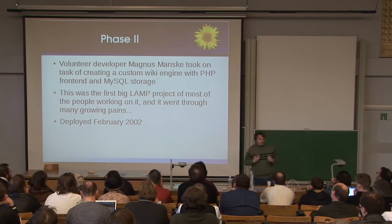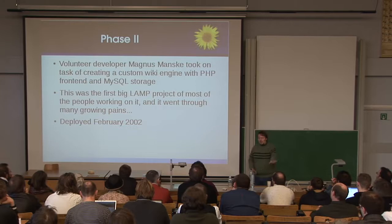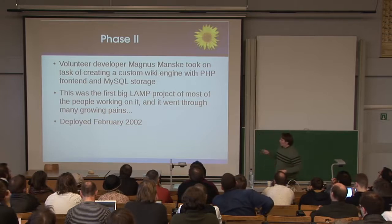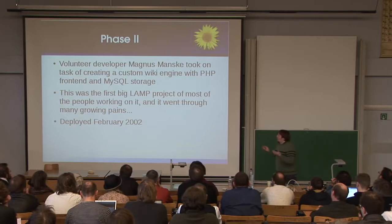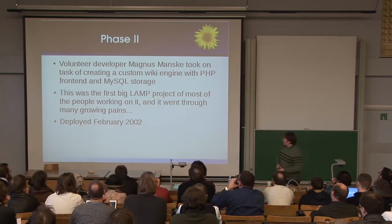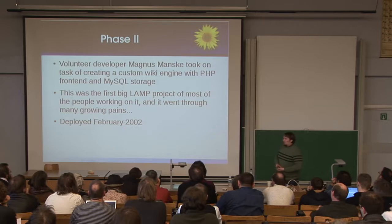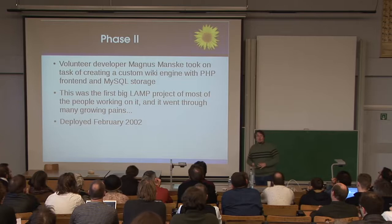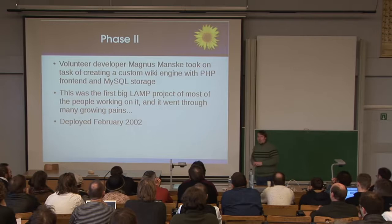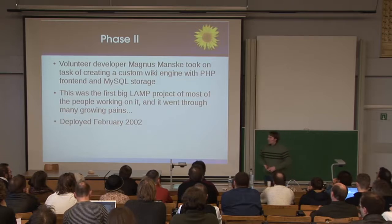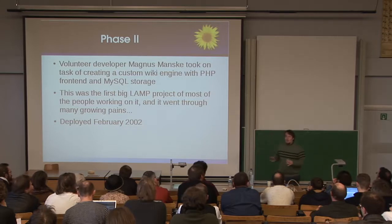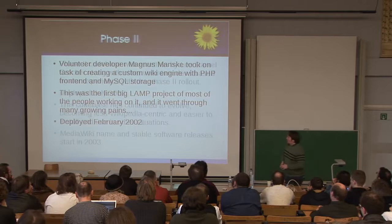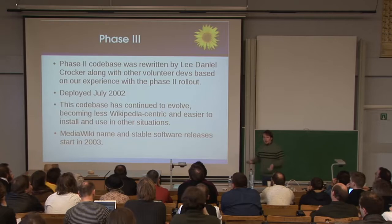So we went ahead and decided to create specific software just for Wikipedia, built initially by Magnus Manske, a volunteer developer from Germany, who just said 'I'm going to do it' and built it using the PHP MySQL stack. A lot of us — it was really our first big PHP project and we didn't really know what we were doing. Once we deployed the first version in February 2002, about a year after Wikipedia started, we found it sort of worked but had serious performance problems — we forgot to put indexes on the tables, little newbie mistakes like that. So it ended up getting totally rewritten based on our actual experience.